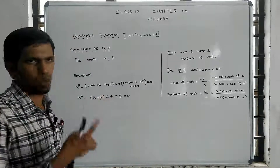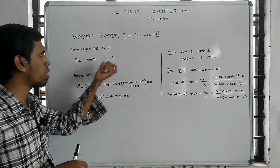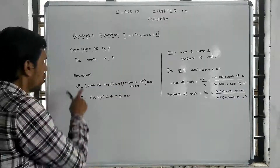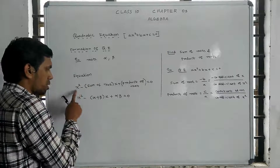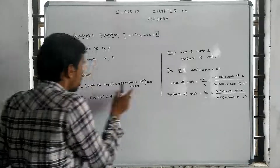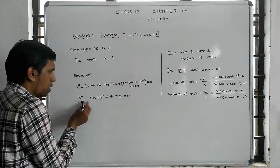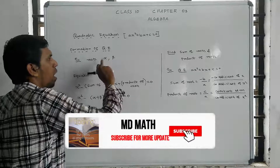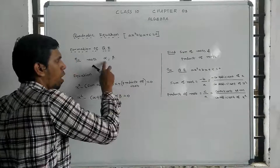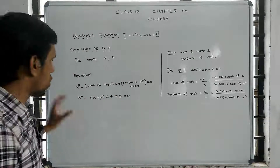For a quadratic equation, we find the sum and product of roots. Root 1 is alpha, root 2 is beta. The formula is: x squared minus (sum of the roots) x plus (product of the roots) equals zero. That is, x squared minus (alpha plus beta) x plus (alpha times beta) equals zero.